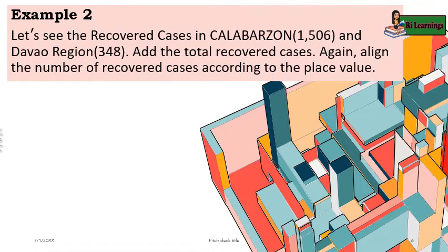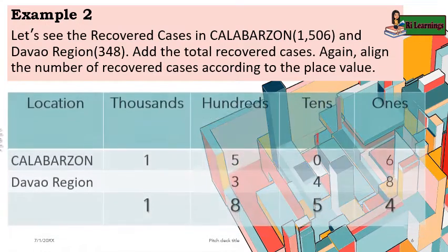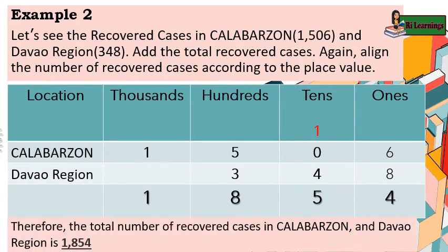Example number two: the recovered cases in Calabarzone are 1,506 and in Davao region 348. Add the total recovered cases. Align the numbers according to place value, then do the addition. Therefore, the total number of recovered cases in Calabarzone and Davao region is 1,854.